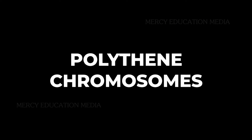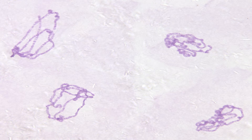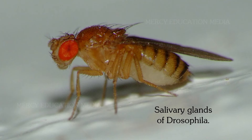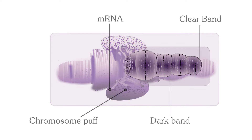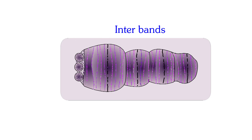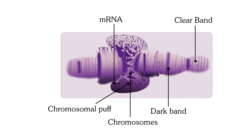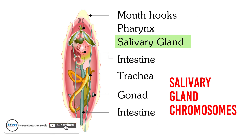Polythene chromosomes were observed by C.G. Balbiani in 1881 in the salivary glands of Drosophila. The characteristic feature of polythene chromosome is that along the length of the chromosome, there is a series of dark bands alternating with clear zones called interbands. The polythene chromosome has an extremely large puff called Balbiani ring, also known as chromosomal puff. As this chromosome occurs in the salivary gland, it is known as salivary gland chromosome.